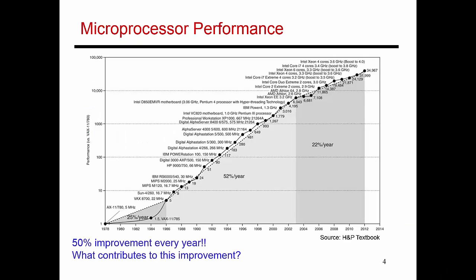Let me now shift gears and talk about important technology trends. In this figure, I'm showing performance over time. There's a stretch of almost 20 years where performance was increasing by about 52% every single year. Then in 2003, we saw this curve start to flatten out, and since then we've only been seeing an improvement of about 22% every single year. What are the reasons behind this impressive improvement, and what is the reason behind the recent decline?